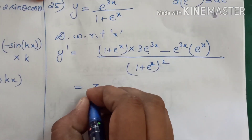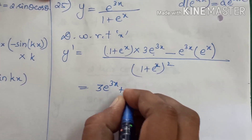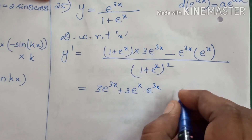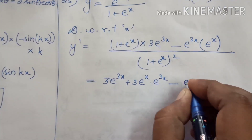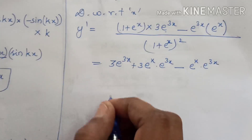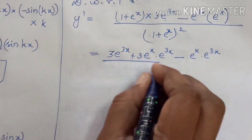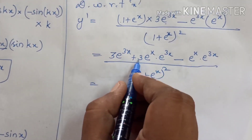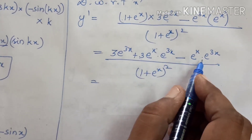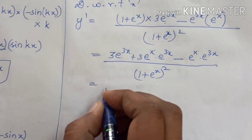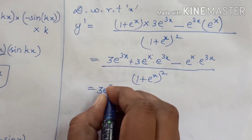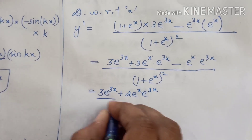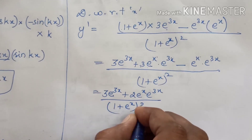Multiplying out inside: 3e^(3x) plus 3e^x · e^(3x), minus e^x · e^(3x). Collecting terms in the numerator: 3e^(3x) plus 2e^x · e^(3x). So y dash equals [3e^(3x) + 2e^x · e^(3x)] divided by (1 + e^x) squared.